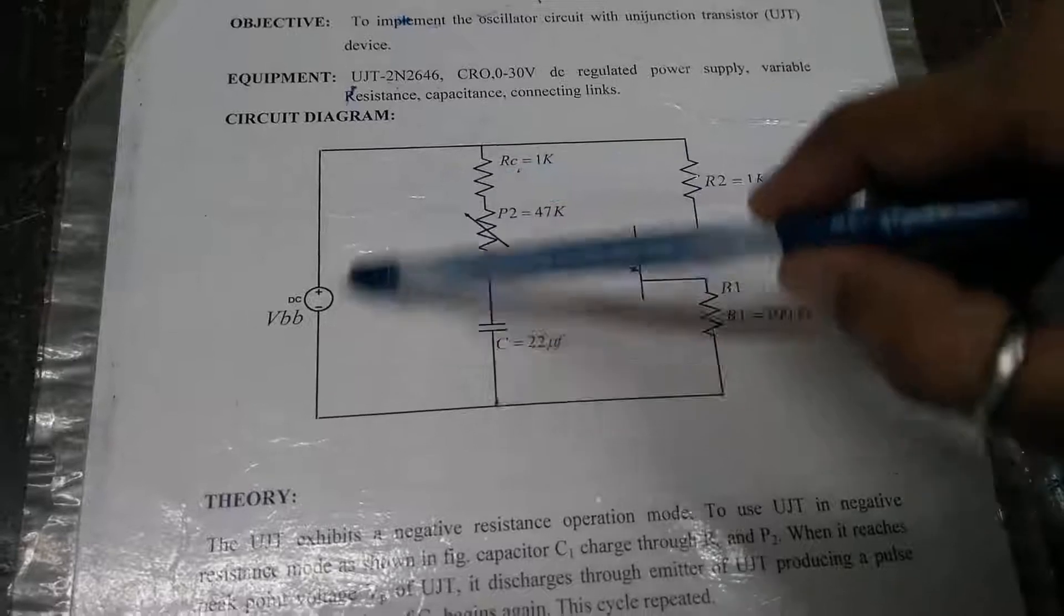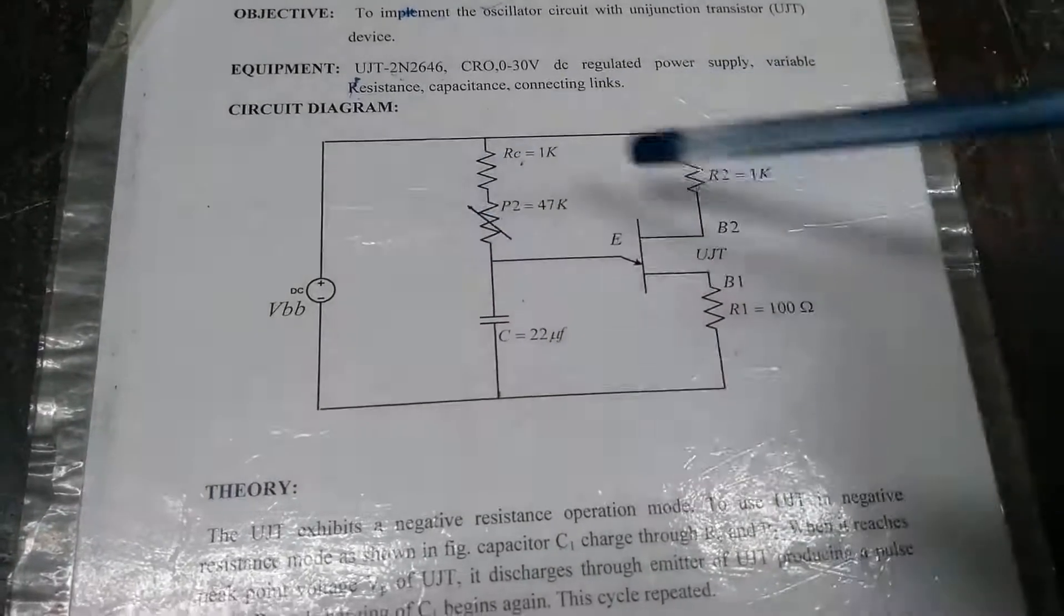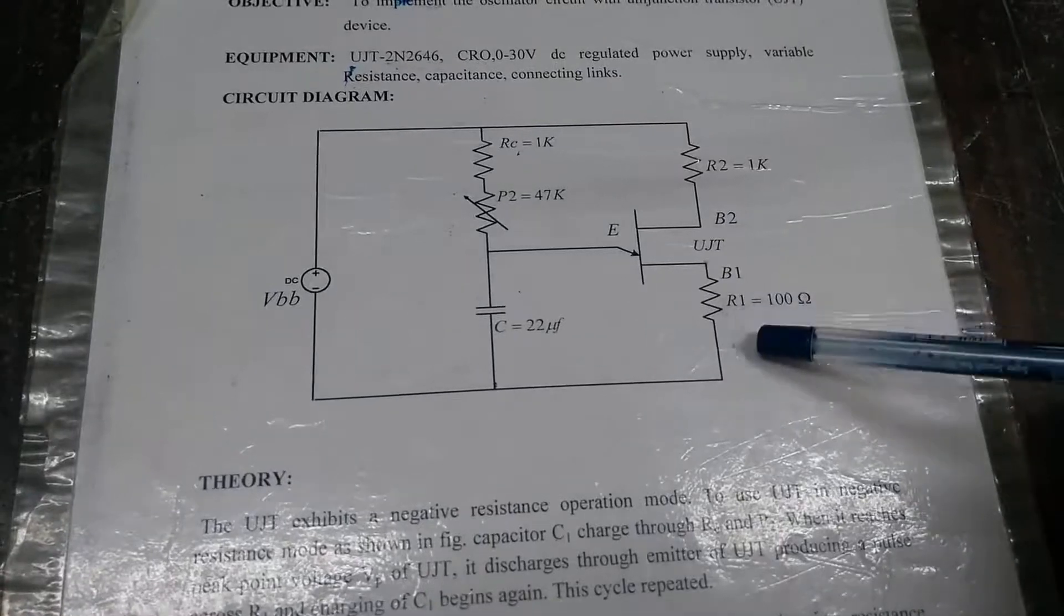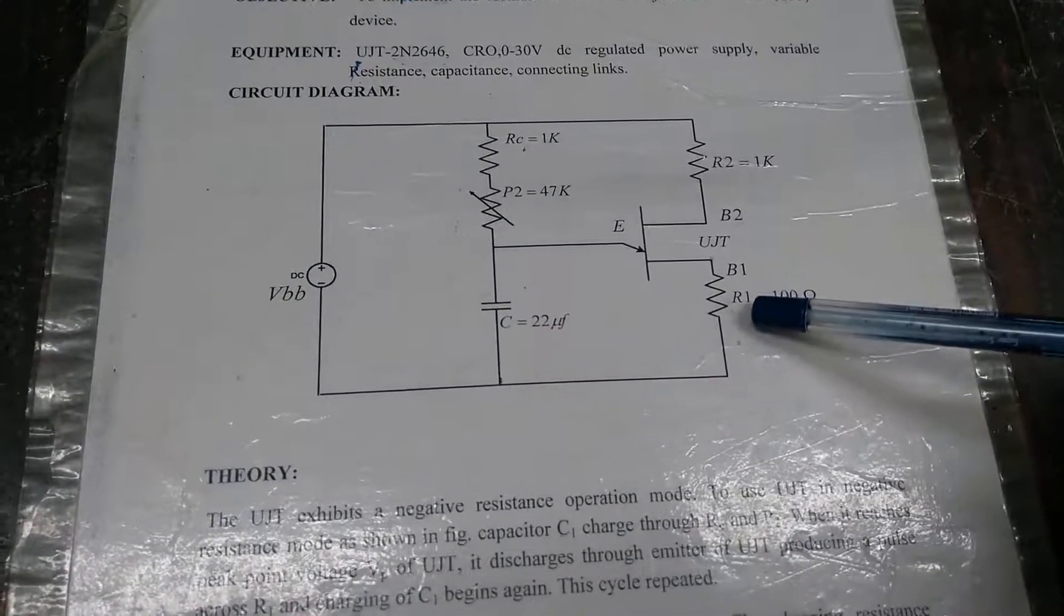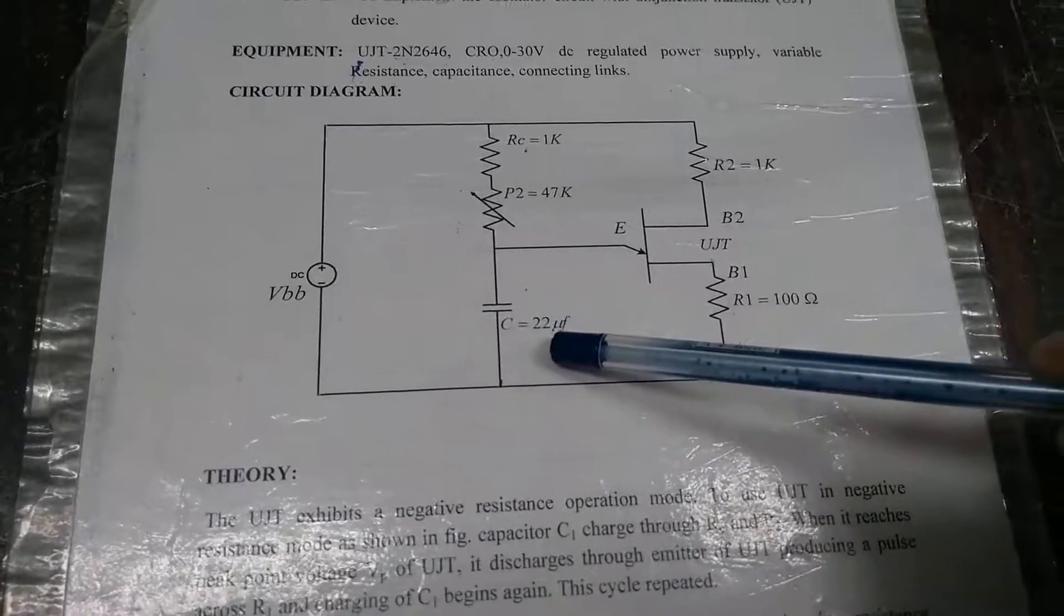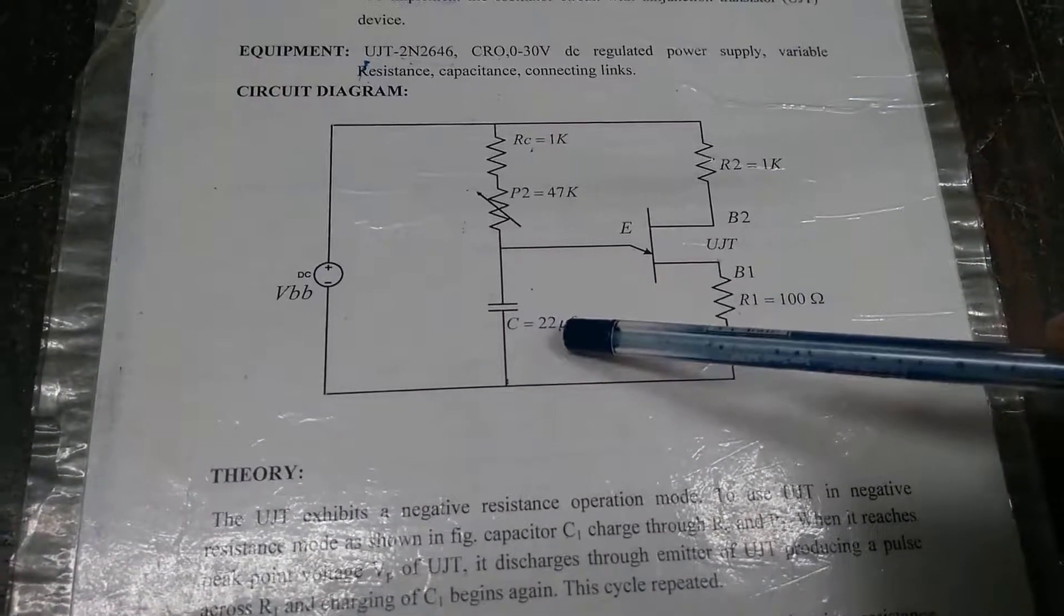Now we will apply here 10 to 15 volts and we want to observe what is our output at this R1, whether we are getting the triggering pulses by discharging of this capacitor or not. We have to also observe the charging and discharging of the capacitor.